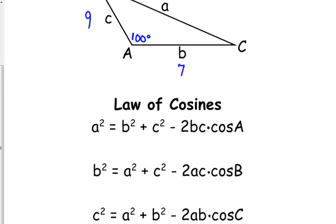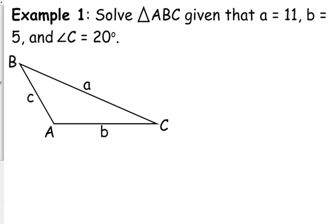All right, so how do we use this? If we are given this information, let's start with one where we are given two sides and the included angle. So we are told side A is 11, side B is 5, and angle C is 20 degrees. We cannot do the law of sines because we have side A, we don't have angle A. We have side B, we don't have angle B. We have angle C, we don't have side C. So this has got to be a law of cosines.